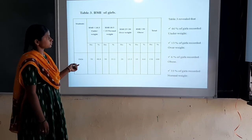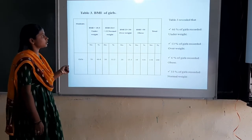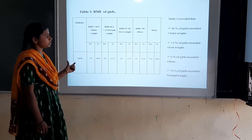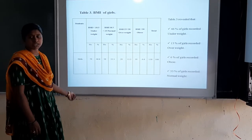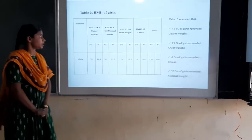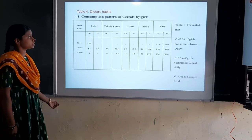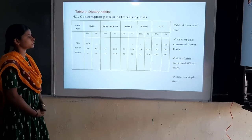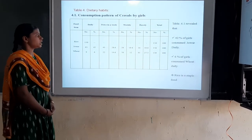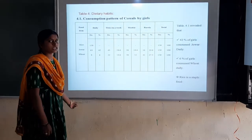Regarding anthropometric status: 46% of girls were underweight, 13% were overweight, 6% were obese, and 33% were normal. Regarding dietary habits and cereal consumption pattern: 42% of girls consumed jowar daily, 6% of girls consumed wheat daily, and rice is a staple food.